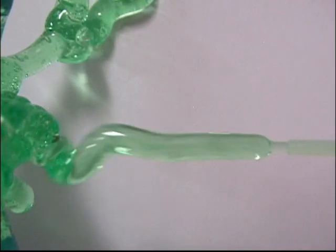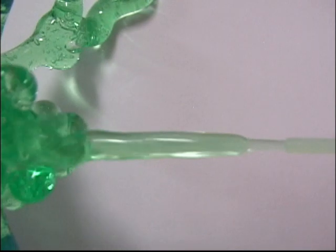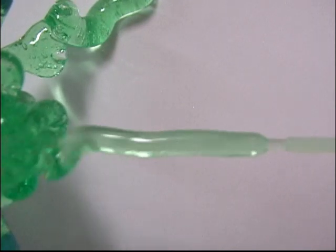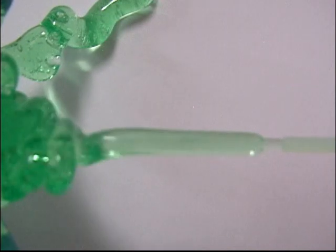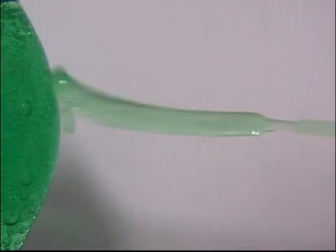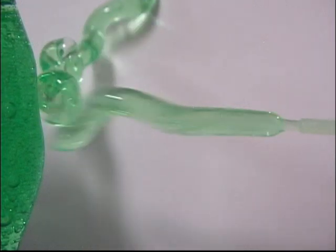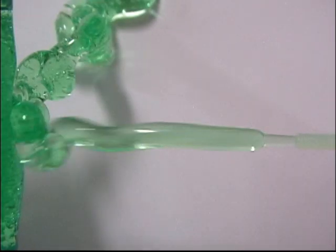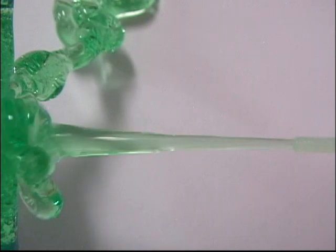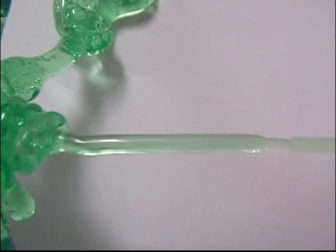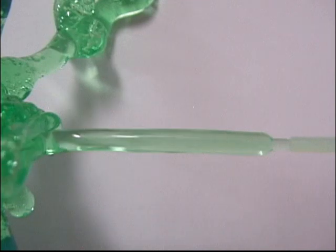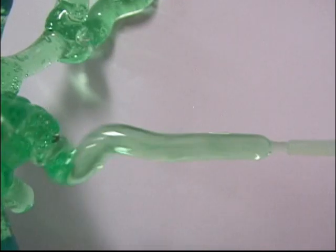The time constant for the onset of die swell is sufficiently slow compared to the fluid velocity that we can see this detached die swell shoulder. If we slow down the velocity of the fluid the die swell shoulder will move up and attach to the nozzle. If we increase the velocity of the fluid the die swell will be pushed further downstream.